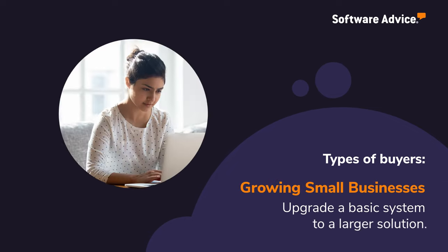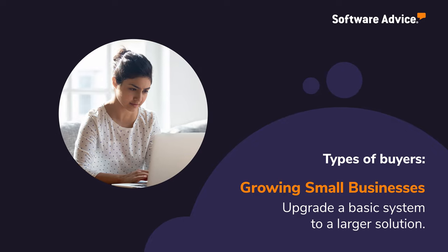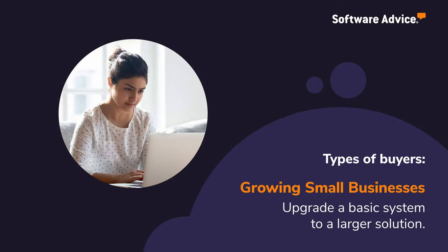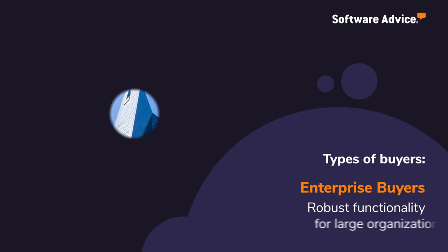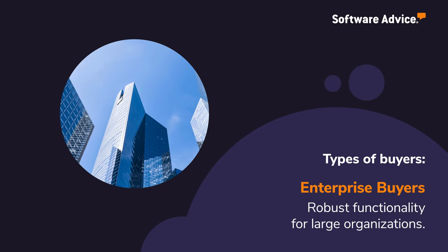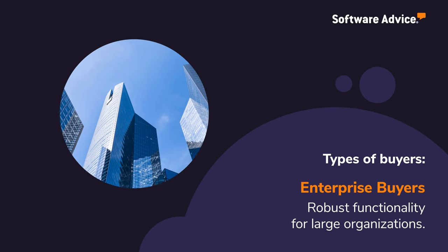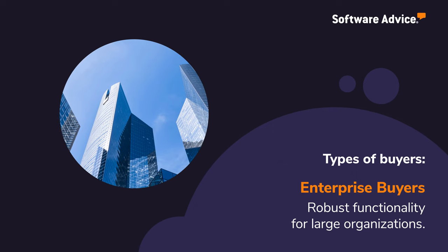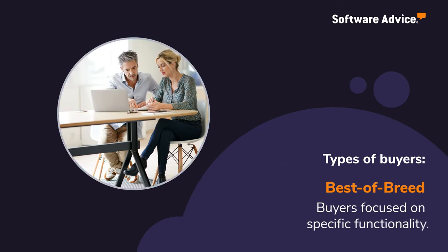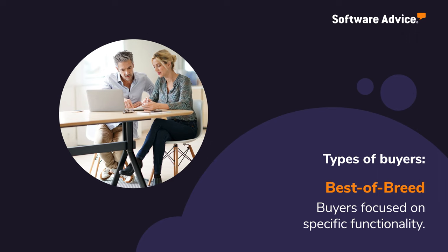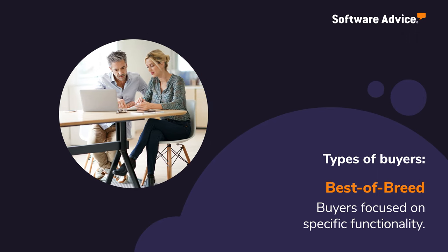Small business owners are on the verge of upgrading basic systems to a solution that provides more robust functionality. Enterprise buyers represent organizations that need a full enterprise resource planning solution with robust functionality that caters to larger companies. Best-of-breed buyers are focused on specific functions and often consider the accounting features of the product to be more important than integration.